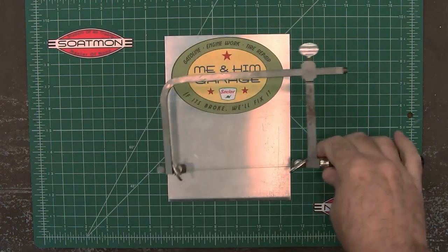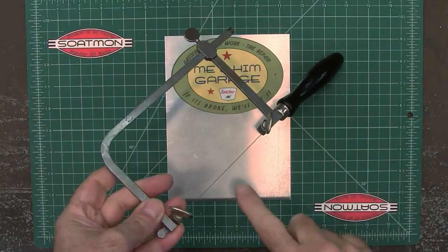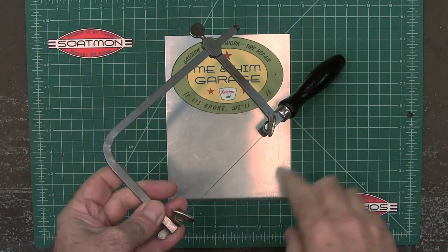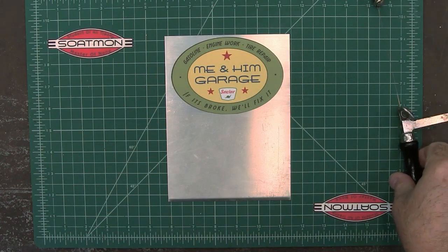One way you can cut this out is to use something like this, which is a jeweler saw - you can get these nice fine little blades, but what I'm going to use is a scroll saw.